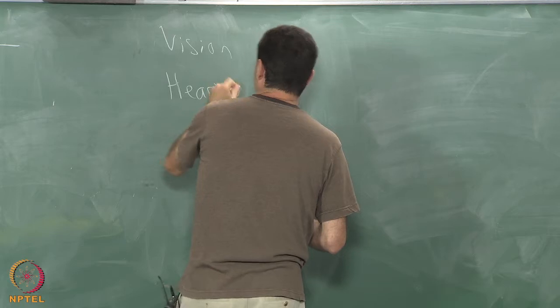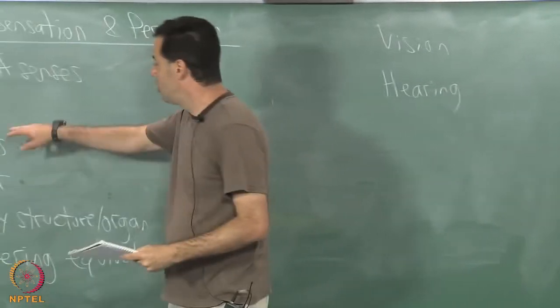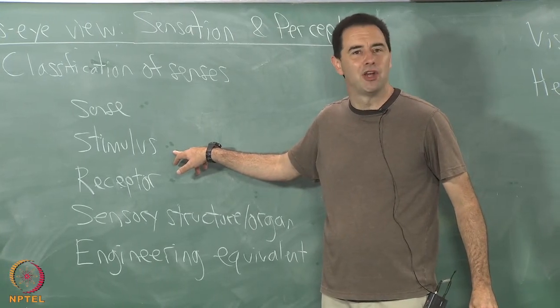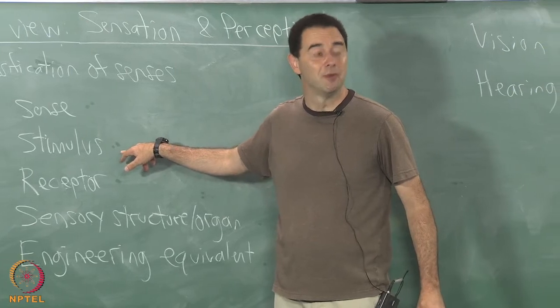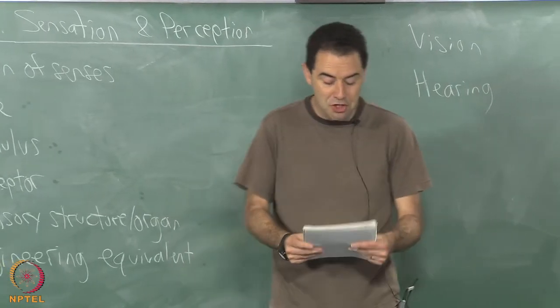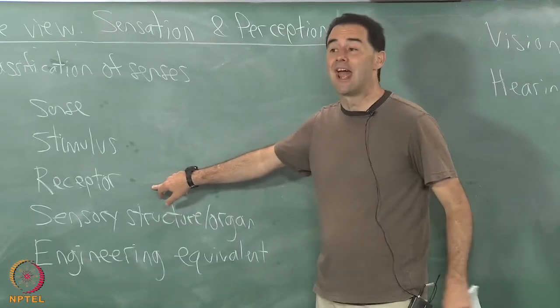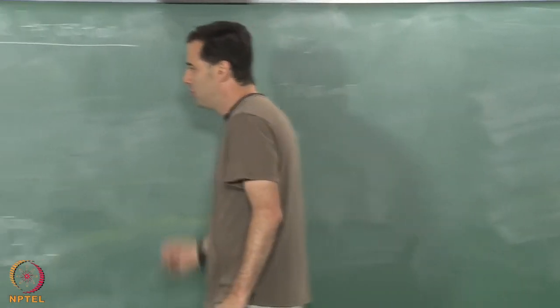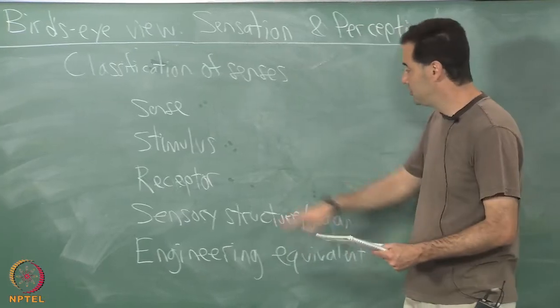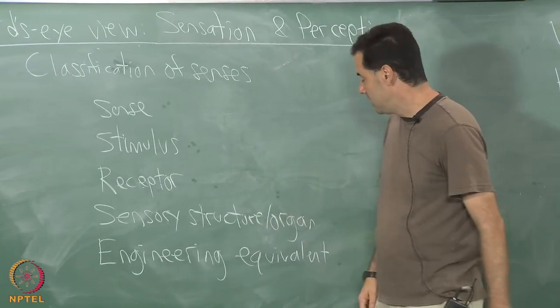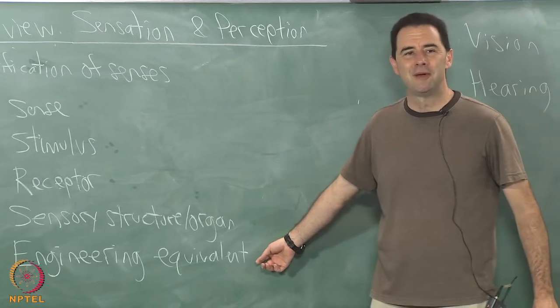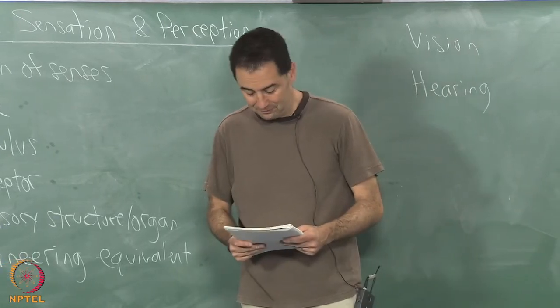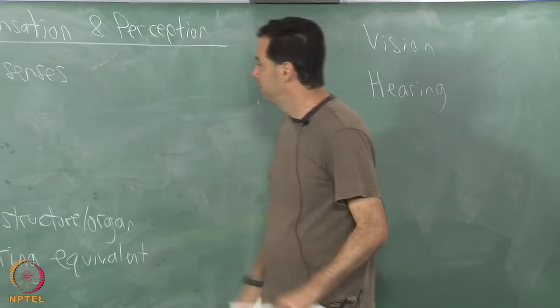The next one is hearing. If we go to hearing, the sense is called hearing, what is the stimulus? Air pressure vibrations or air pressure waves. It can be considered a kind of mechanical vibration. Good that you use the word mechanical because the receptors are called mechanoreceptors. Of course the sensory structure is the ear and the engineering equivalent would be a microphone perhaps. We put microphones which are very close in design to speakers.